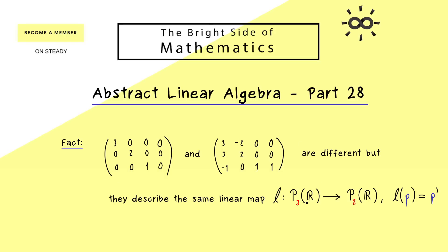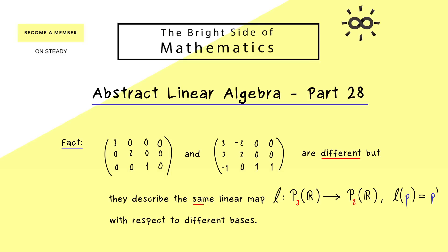More precisely, it was the linear map from the polynomial space P3 to the polynomial space P2, which was given as the derivative. And the reason that we can get two different matrices as matrix representations for this linear map is that we can choose different bases on the polynomial spaces. Hence, what we get here is two different matrices that are still related in the sense stated here.